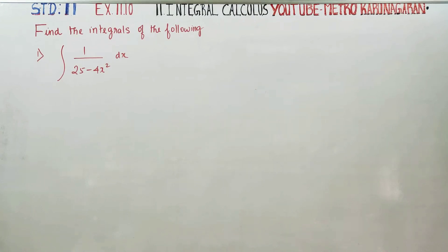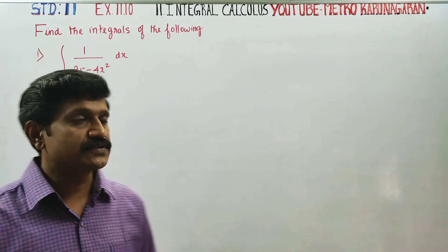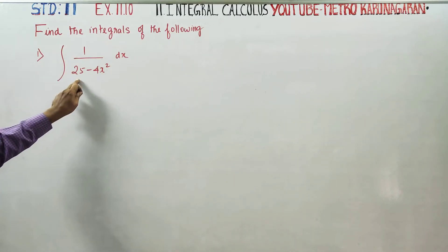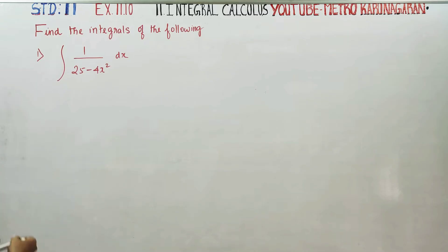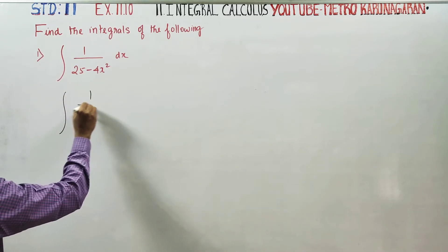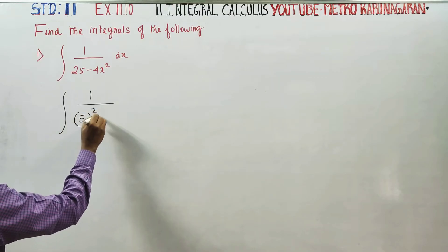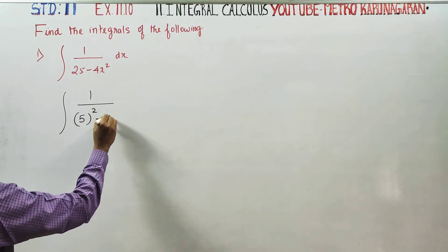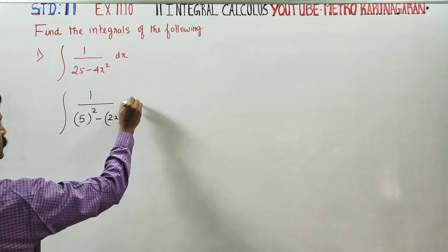Hello 11th standard students. I am Metro Karanagaran. This is exercise number 11.10. Integrate 1 by 25 minus 4x squared dx. The problem is 1 by 5 squared minus 2x squared dx.